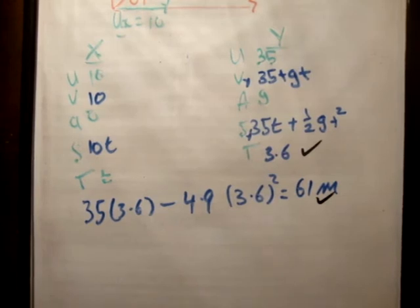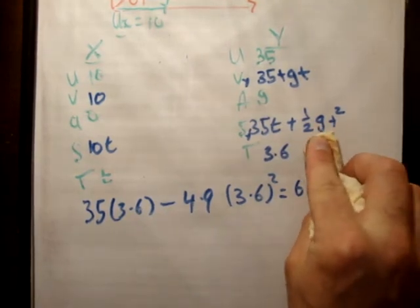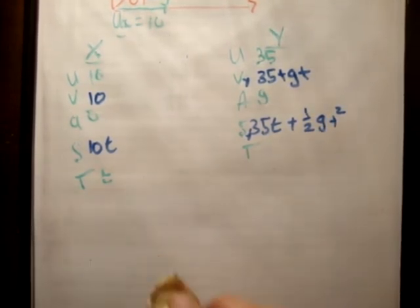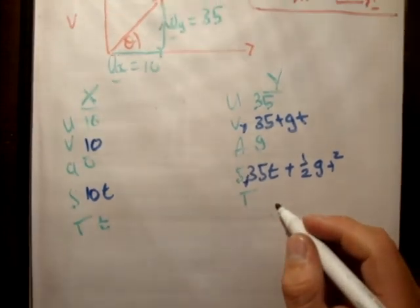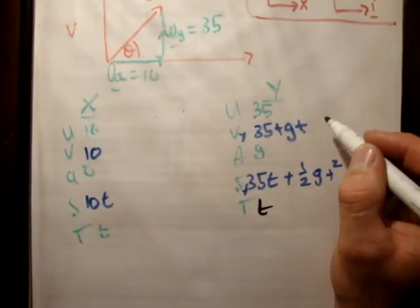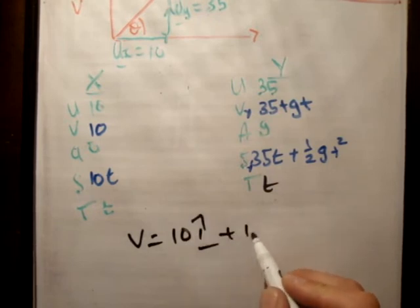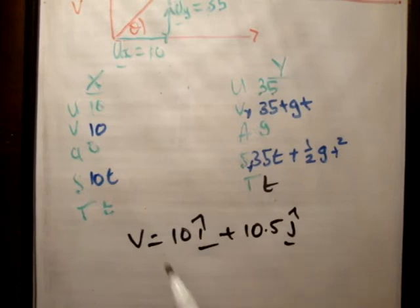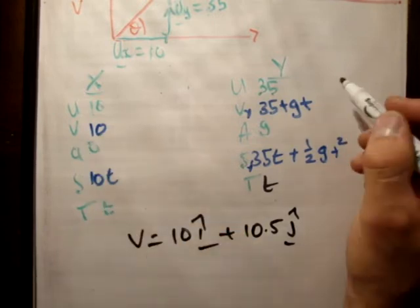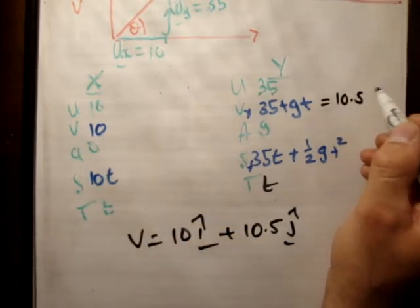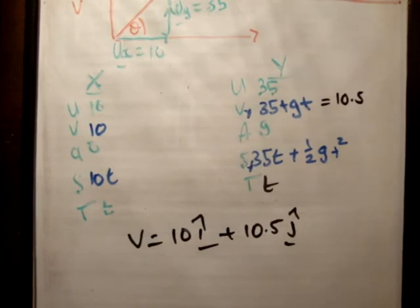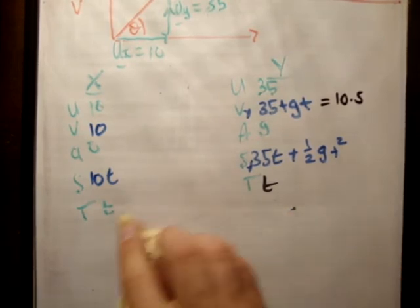The next part is we're asked to find the time when the velocity is 10i hat plus 10.5 j hat. So it's 10i hat plus 10.5 j hat. So let that equal to t. So we're saying v is equal to 10i hat plus 10.5 j hat. Like that. Of course, this one isn't going to change. But this one here is changing. Like so. So you're going to find the time at which 35 plus gt is equal to 10.5.